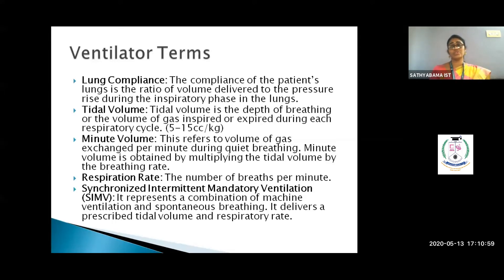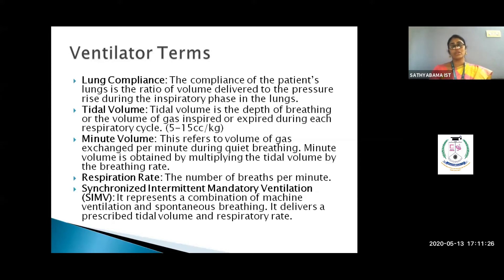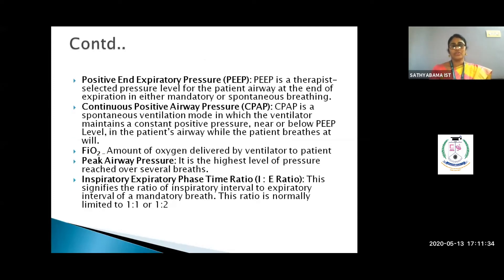SIMV — Synchronous Intermittent Mandatory Ventilation — combines spontaneous and mandatory breathing. You set the volume and respiration rate. For a ventilated patient who is sedated and not physically active, the rate is set lower than the normal 12–16 breaths per minute, typically around 7–8, since the patient does not need to exert effort.